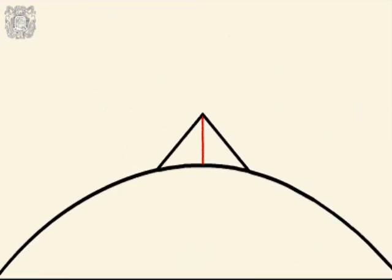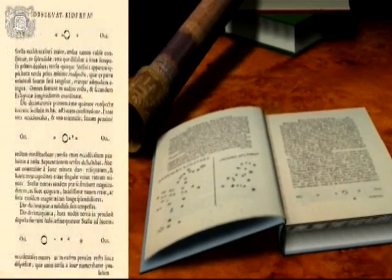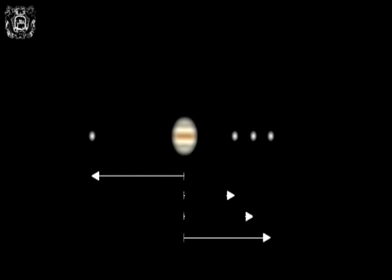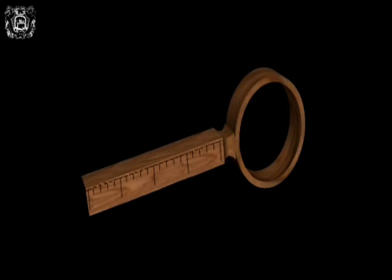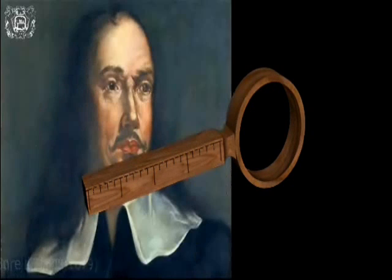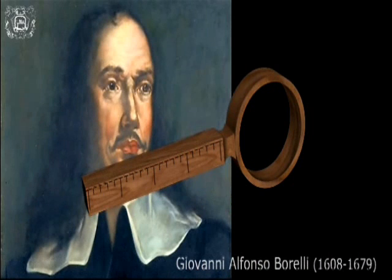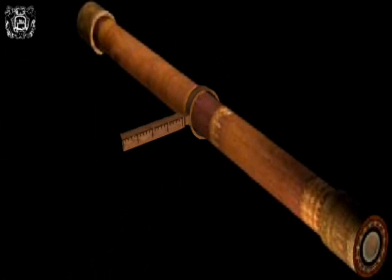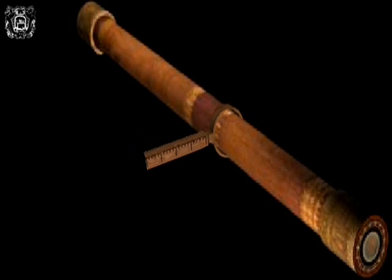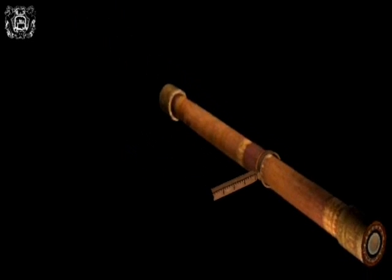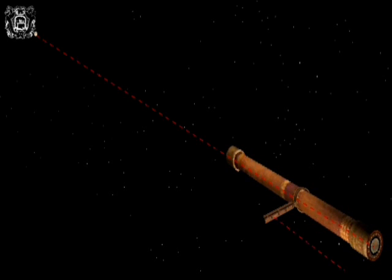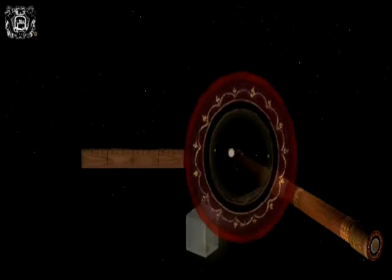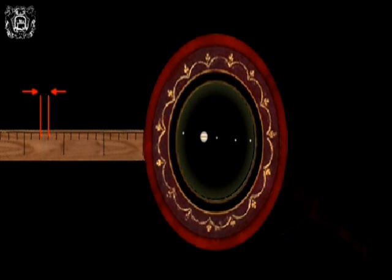After discovering Jupiter's moons, Galileo tracked their movements for several days. To measure with precision the distance of each satellite from the planet, Galileo designed a device known as a micrometer. Giovanni Afonso Borelli described the micrometer as a rule with 20 equal divisions. The device was fitted on the telescope and could slide along the body tube.